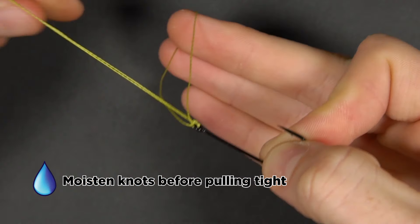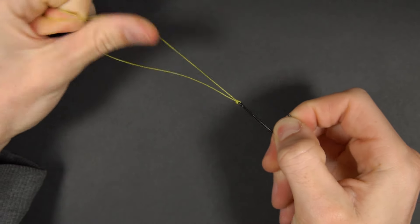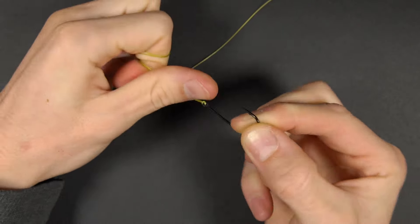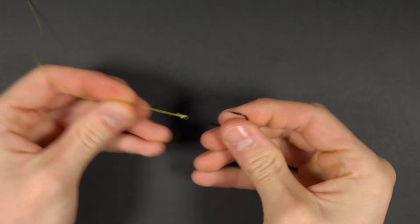Moisten the knot with saliva to stop friction melting the line and then pull the knot down tight, ensuring that you pull on the main line and the tag end too. Once tightened down completely, cut the tag end off with scissors and you're finished.